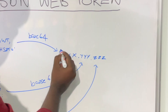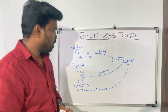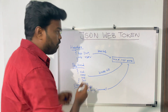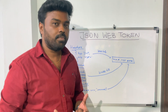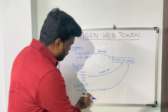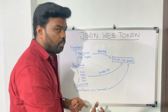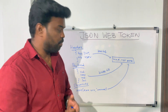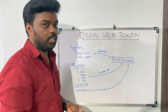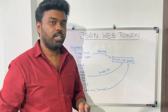The token is returned to the client, which uses it in every request to the server. The server has to verify the token has not been tampered with. Every time the server receives the token, it tries to recreate the signature using the same base64 header, base64 payload, and the secret key. If the newly created signature differs from the signature already in the token, it is obvious that the token has been tampered or modified, and the server will deny the request. This is how the server verifies the integrity of the token.